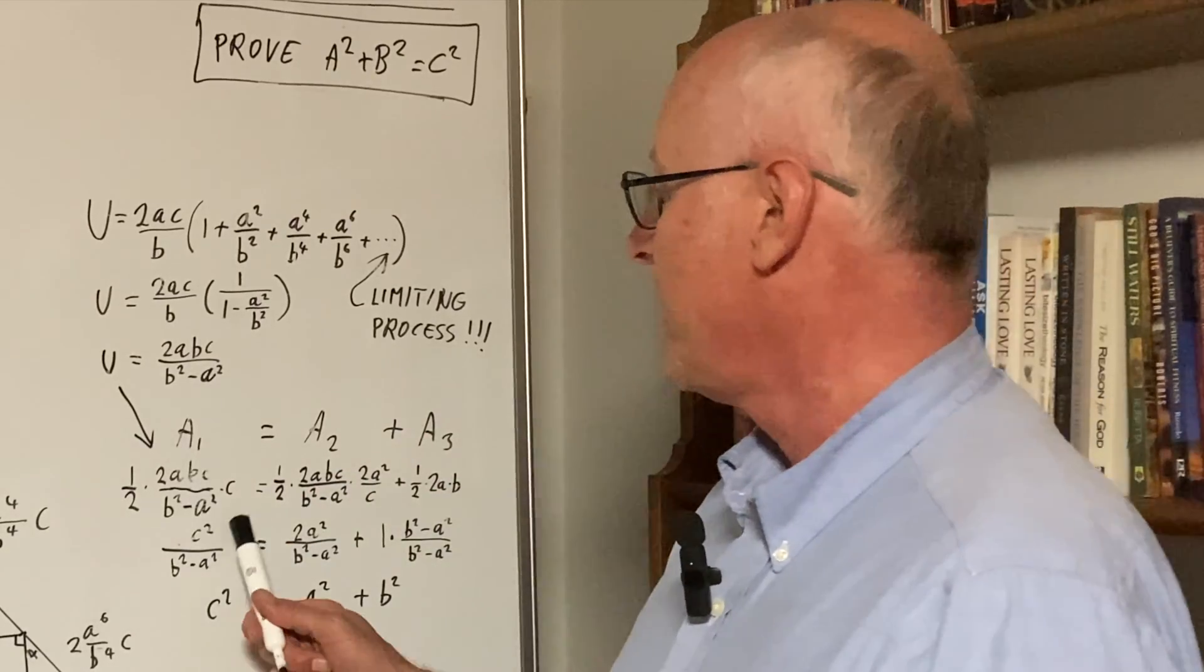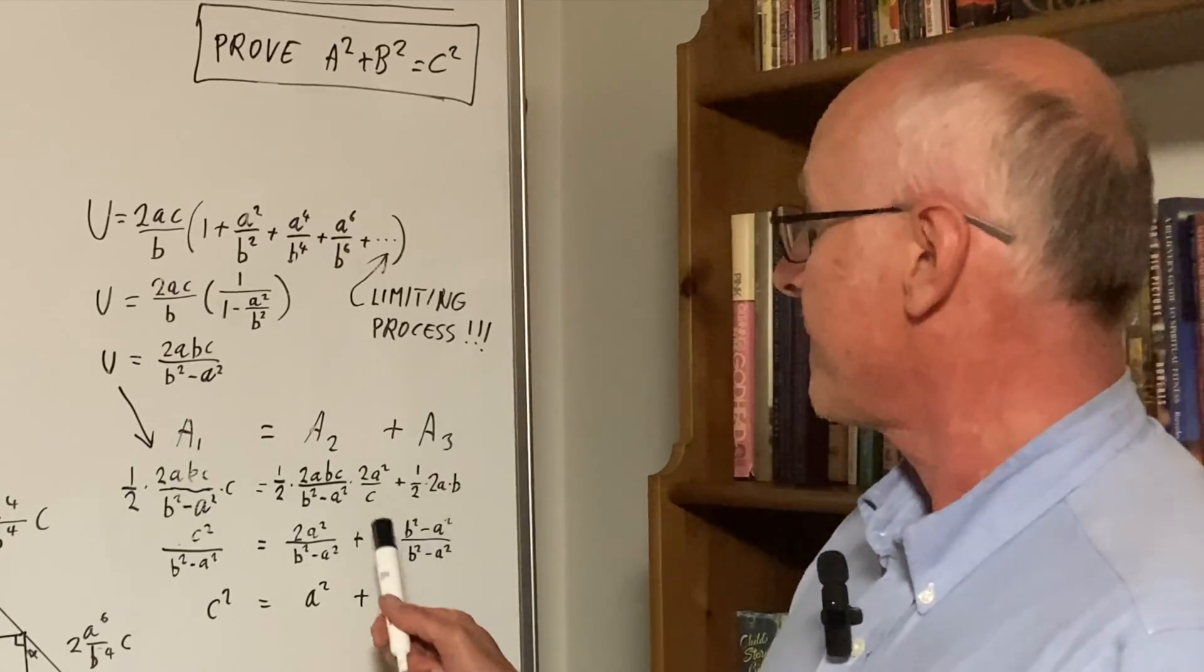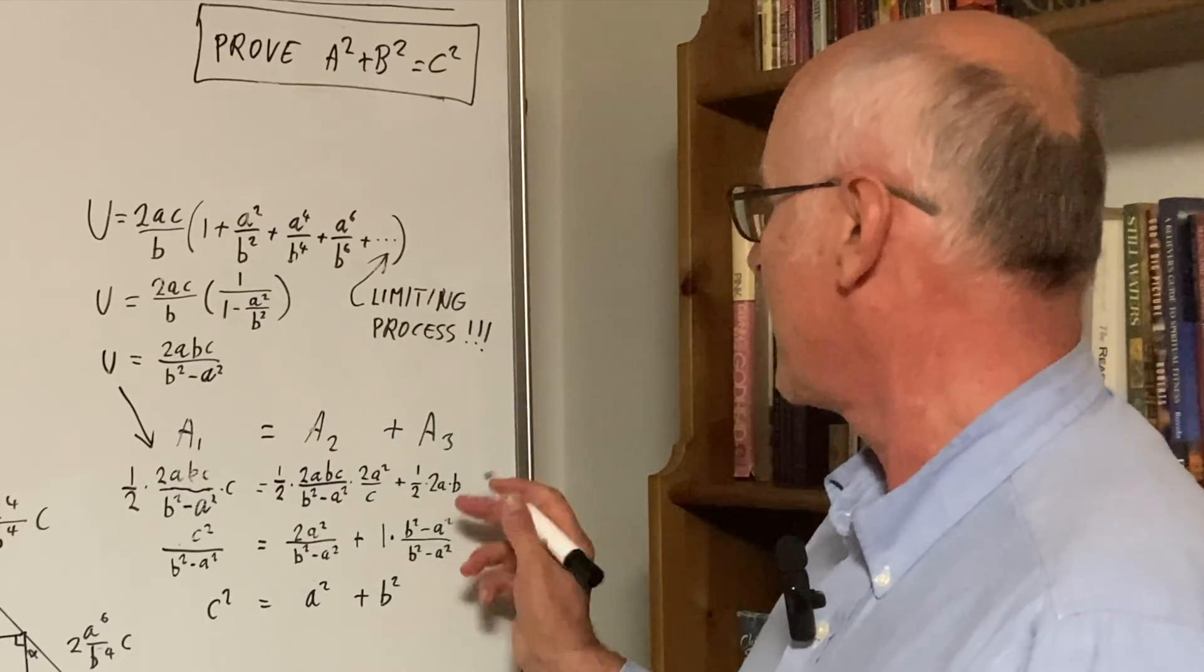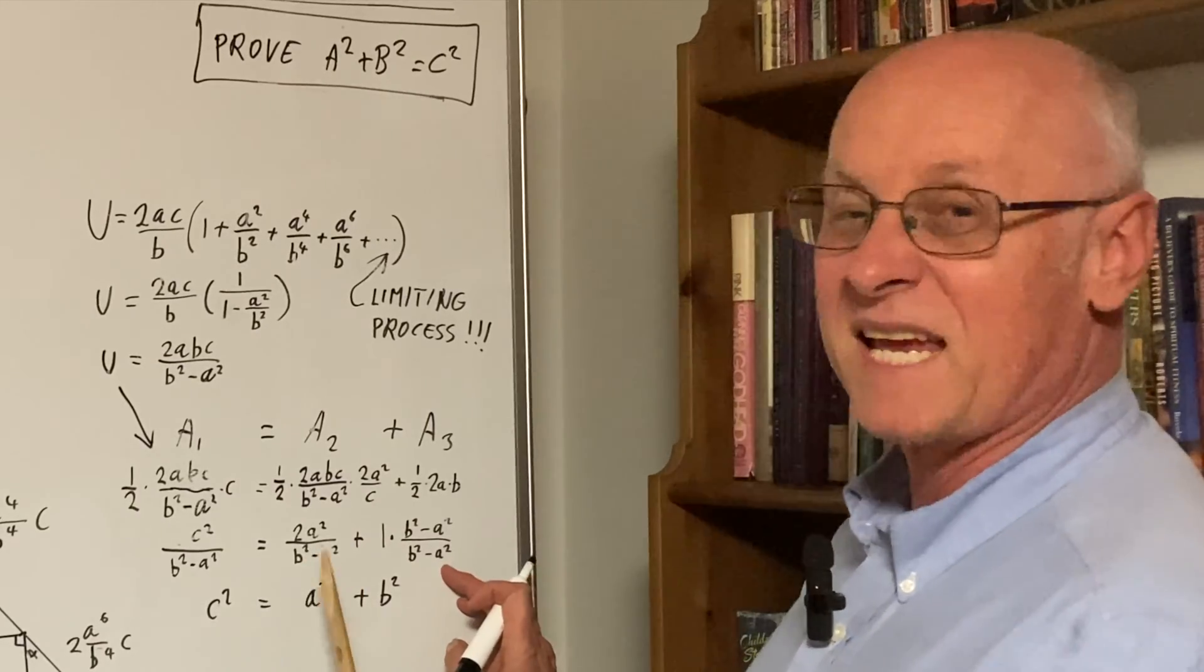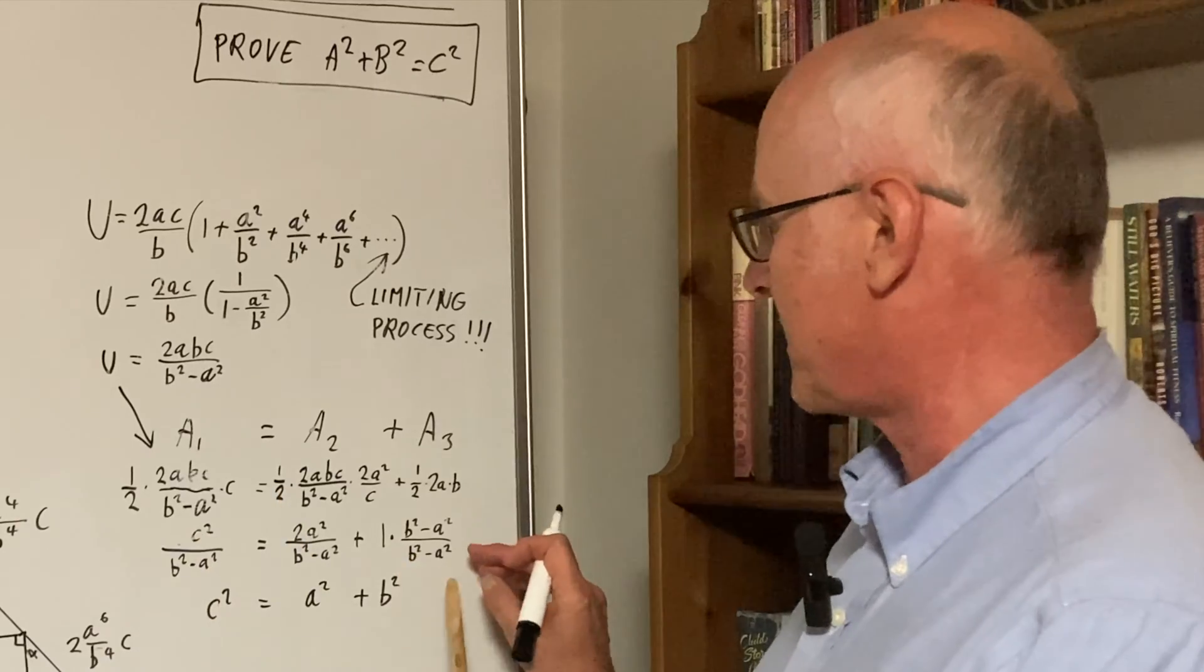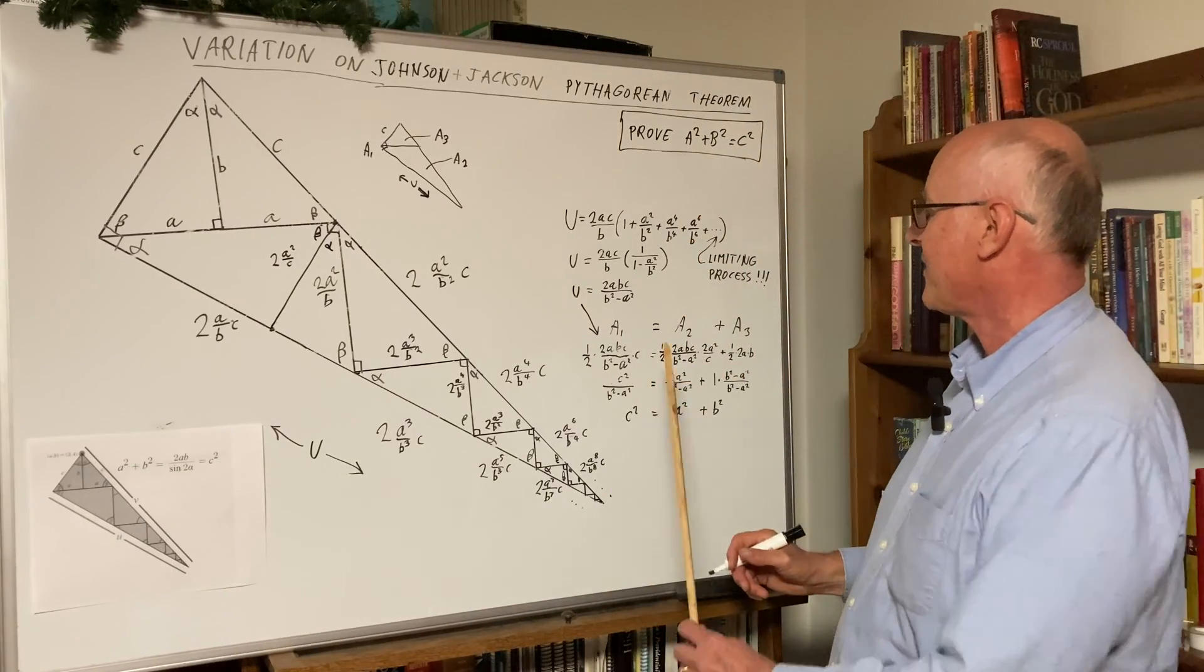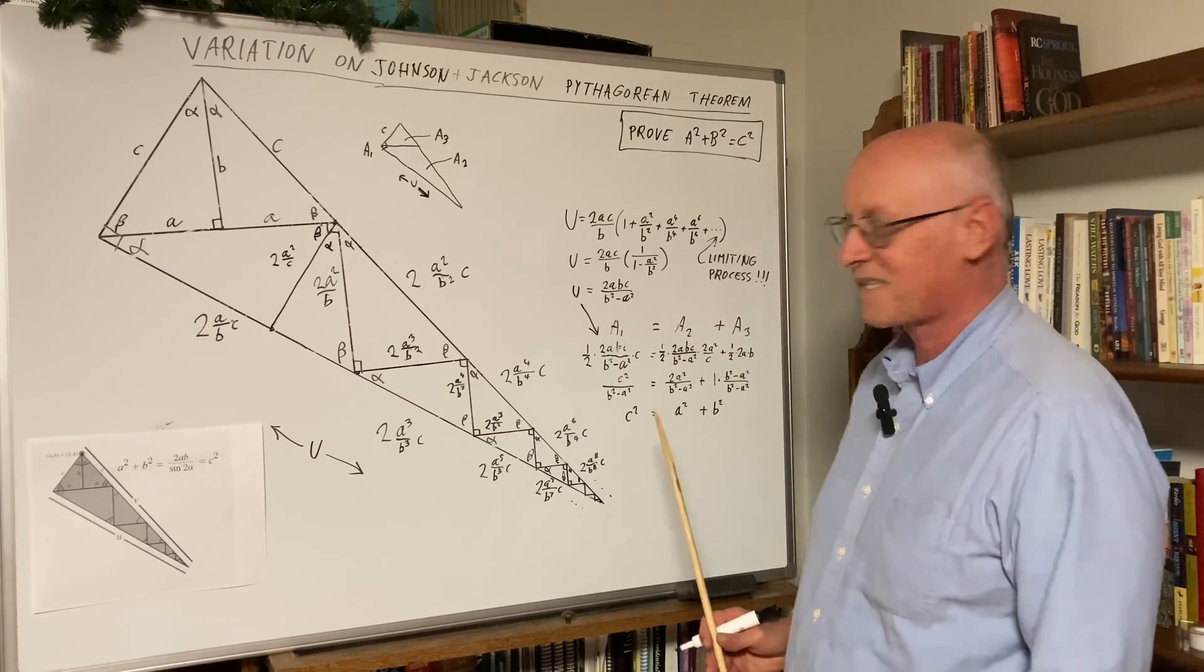We clean that up. This is all just algebra. You get c squared over b squared minus a squared is 2a squared over b squared minus a squared plus this one. And we now need to put everything under the same denominator. So it's a fraction, so it will add up nicely. So we need our b squared minus a squared, which we do. That cancels out, giving us c squared equals a squared plus b squared.